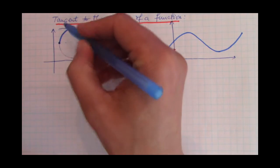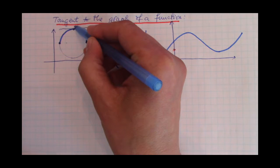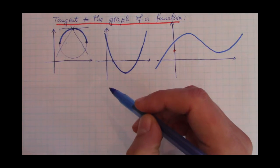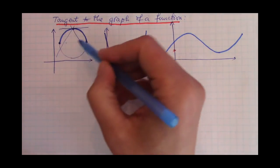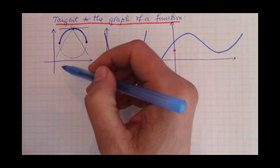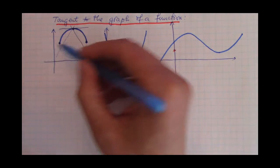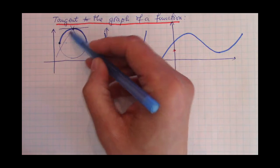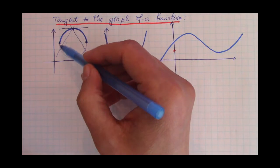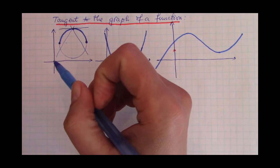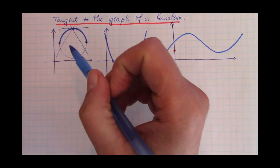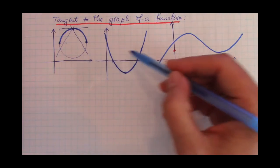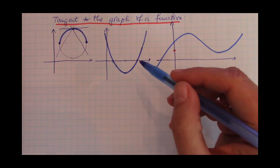We actually have infinitely many such lines. Somebody might say those infinitely many lines appear just because we cut the circle in half, and maybe if we extend this upper half toward minus infinity and plus infinity, these lines would intersect the new graph in more than one point. That may or may not happen, but let's move away from this to a function that goes from minus infinity to plus infinity.